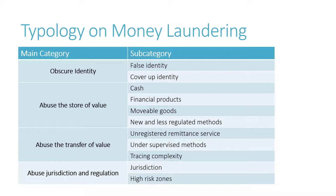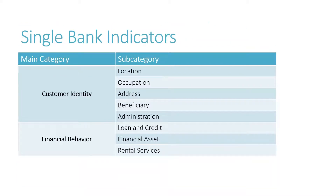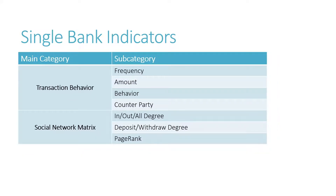We will construct signals based on the typologies. Firstly, single bank indicators. These are the indicators that can be calculated with the information held by an individual bank, and it falls under four main categories: customer identity, financial behavior, transaction behavior, and social network metrics.